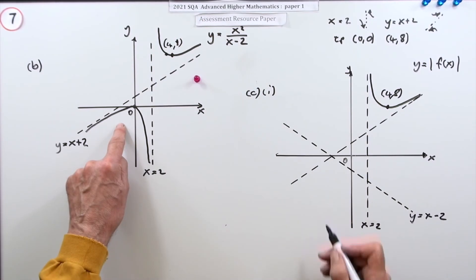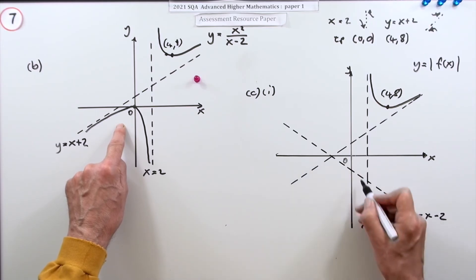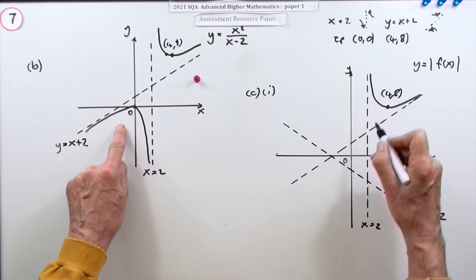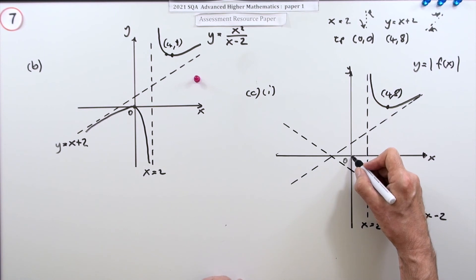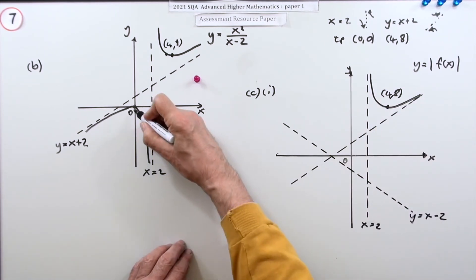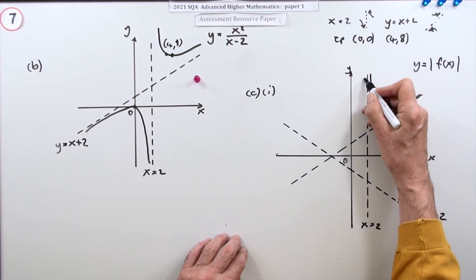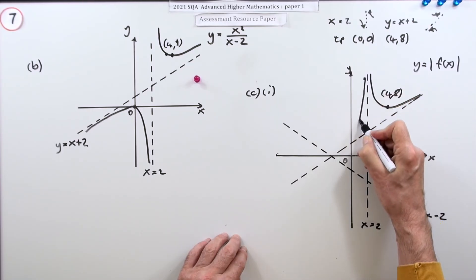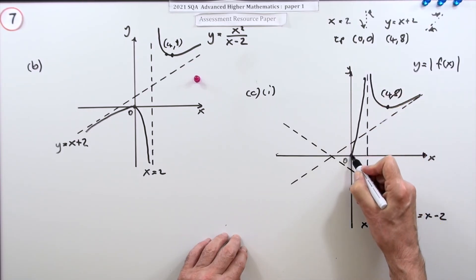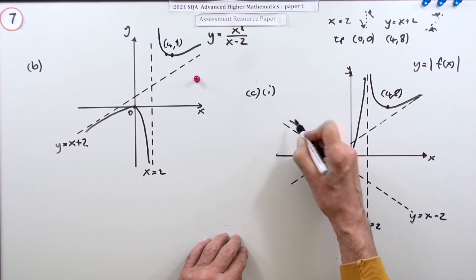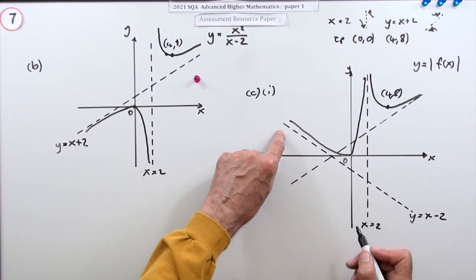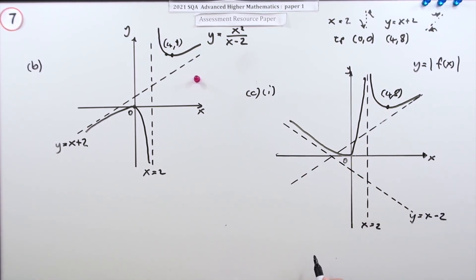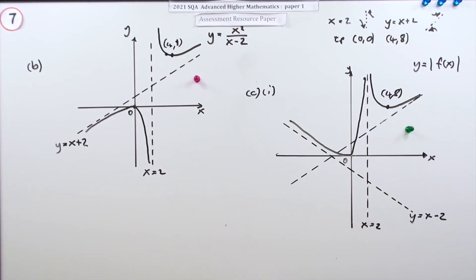The part of the graph that was below the x-axis will now go above it. It still passes through the origin, but instead of going down it comes from above, turns at the origin, then heads off to the new asymptote y equals x minus 2. So the completed sketch of the absolute value graph looks like that.